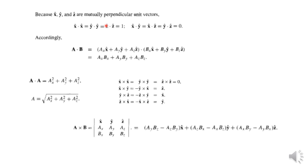For the dot product, the basis vector dot products: x̂·x̂, ŷ·ŷ, and ẑ·ẑ are all equal to 1. Since x̂ is a unit vector, the dot product is the projection of one vector on the other multiplied by their magnitude. Since they are along the same direction, the angle between them is 0, cos(0) = 1, and the magnitude is 1, so the result is 1.